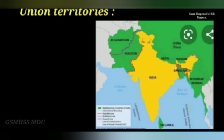Now let's go to the topic of Union Territories. How many Union Territories are in India? There are 8 Union Territories: Delhi, Jammu and Kashmir, Ladakh, Dadra and Nagar Haveli, Daman and Diu, Puducherry, and Chandigarh. Territory means an area or region — an area of land under the jurisdiction of a ruler or state.